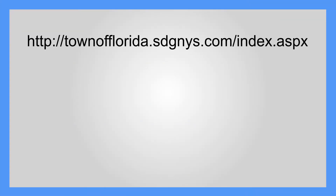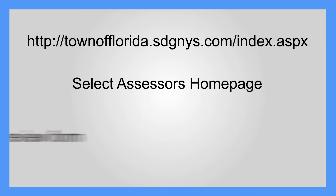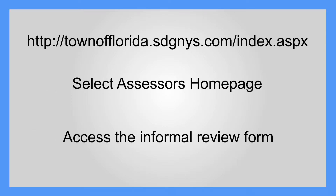Completing the informal review application — complete at your own convenience. Go to the municipal website, select the assessor's home page, and access the informal review form. Residential forms, vacant land, and commercial forms are available depending on the property type. Find your property by SBL — section, block, and lot — by street, or by owner.